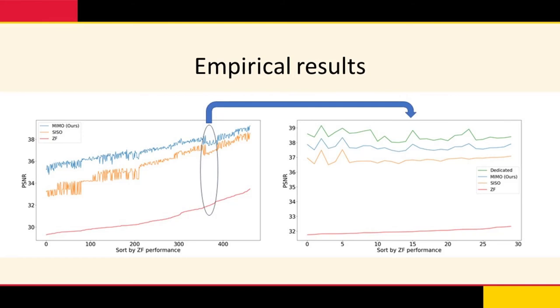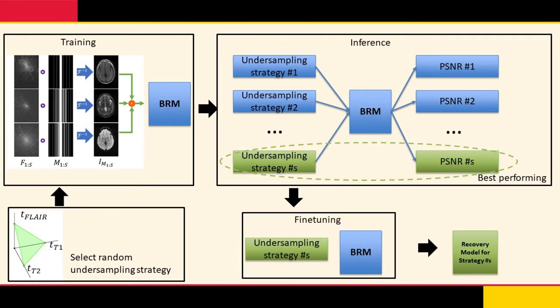We find that, as shown in the graph on the right, the PSNR performance of dedicated models — the green line — is highly correlated with that of the Blind Recovery Model, and in fact negatively correlated with the PSNR of the degraded inputs. This agrees with our hypothesis that BRM can indeed be used as a better guide to select good undersampling strategies. Once we use BRM to find the undersampling strategy, we can fine-tune the strategy very quickly based on the trained BRM to achieve performance similar to that of dedicated models.